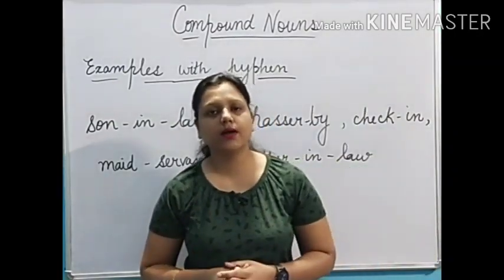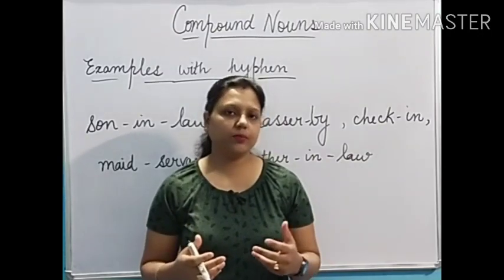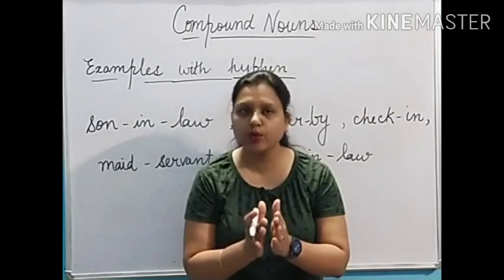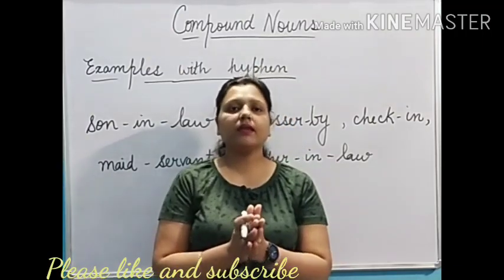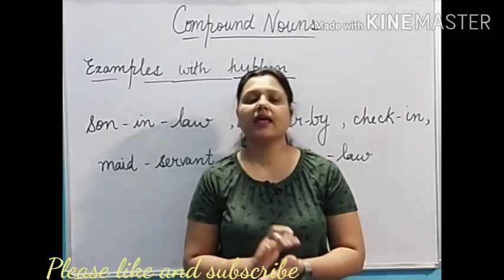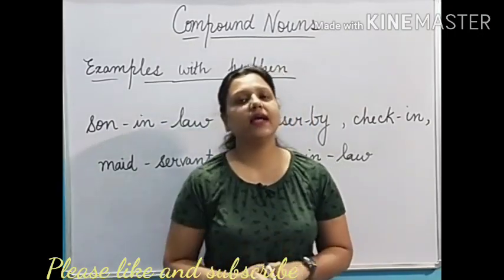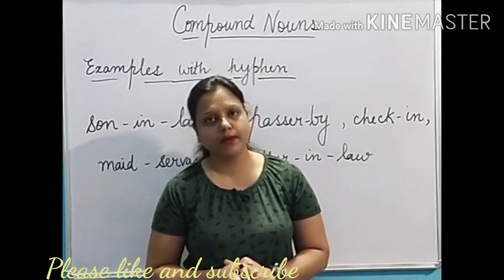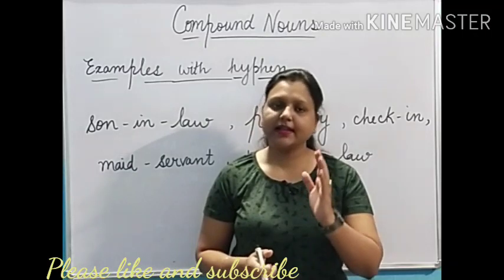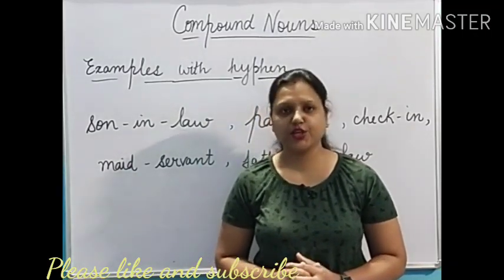So this is how we came to know how compound nouns are formed. Again, I would like to repeat: compound nouns are formed by joining two or more words. They can be in the form of one word, they can be formed with spacing, and they can even be formed with a hyphen. In the next video, I will tell you the formation of compound nouns — how to form them and their combinations. Till then, keep watching and remain hale and hearty. Thank you.